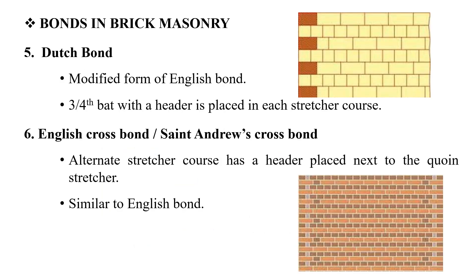The Dutch bond is a modified form of English bond. The difference is that when you add a three-quarter bat, you have a header and stretcher. The stretcher bond arrangement is what makes it a Dutch bond, differing from the English bond.